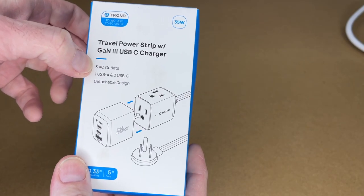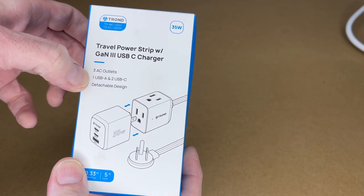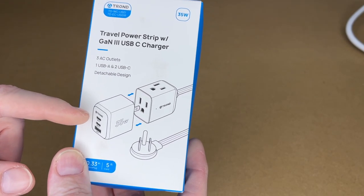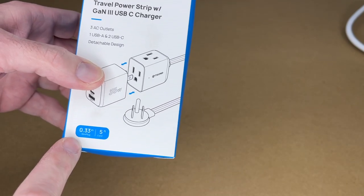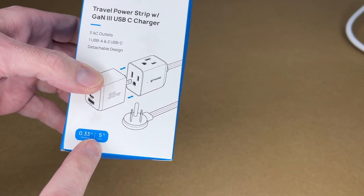This has three AC outlets, one USB-A and two USB-C outlets and the front can be detached so you can use it as a separate charger. The plug depth on this is 0.33 inches and the cord length is 5 feet.